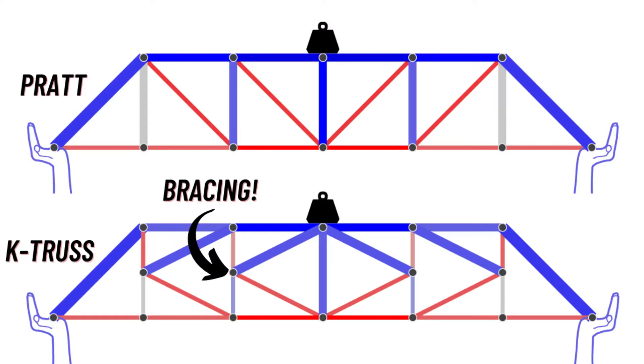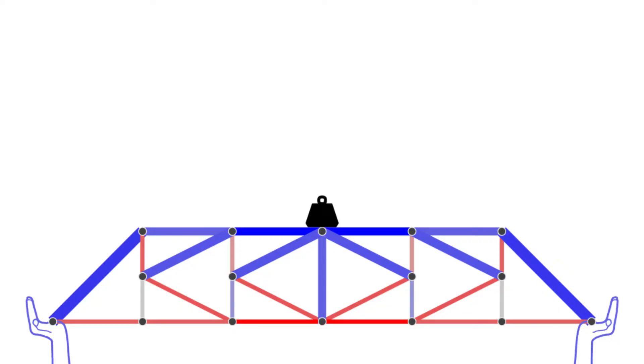The K truss takes a Pratt truss and improves it yet again by adding further bracing to those shorter vertical compression elements. This means you can span further for the same material, or use less material for a similar span. The disadvantage of the K truss is that there are just more pieces to fabricate and more connections to make. But depending on the cost of material and cost of labor and assembly, this can be a good advantage to use if needed.